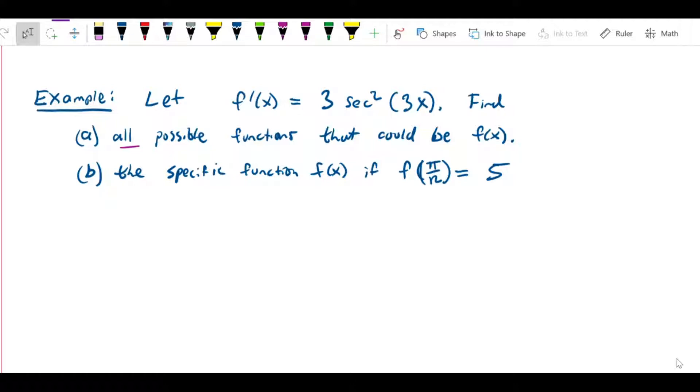Here we have f'(x) = 3 sec²(3x), and what we want to do is find all possible functions that could be f(x). Then we want to find the specific function that is f(x) if we know that f(π/12) = 5.